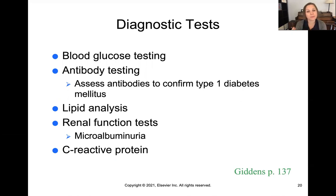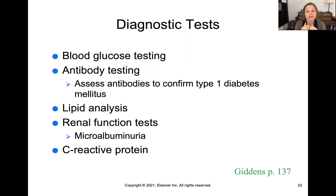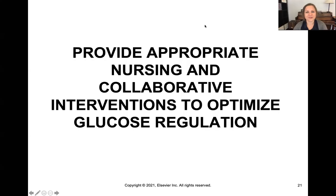Antibody testing is going to confirm type 1 diabetes, since that's an autoimmune condition where the body attacks its own pancreas. A lipid analysis is important because prolonged chronic hyperglycemia causes an elevation in lipids and cholesterol. Renal function tests are needed because the kidneys can suffer from chronic hyperglycemia. And a C-reactive protein is a nonspecific indicator of inflammation in the body — specifically chronic inflammation — which has devastating effects on the body.